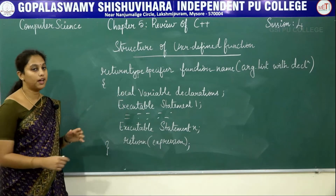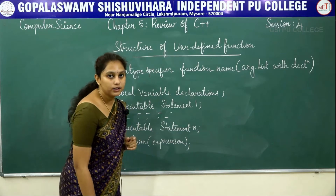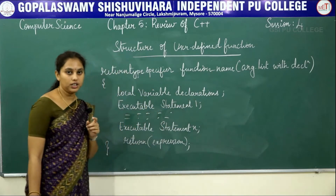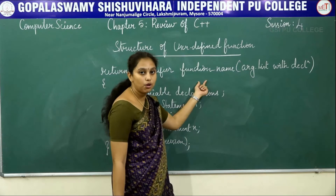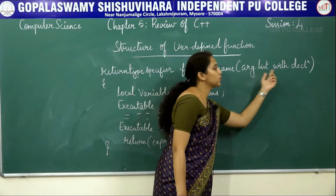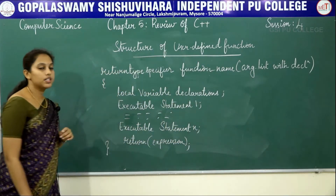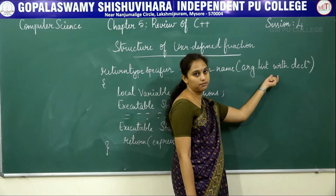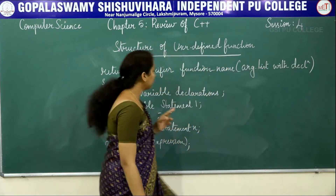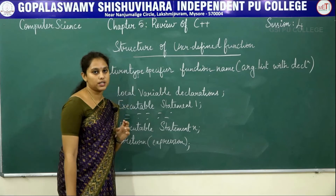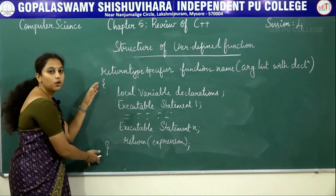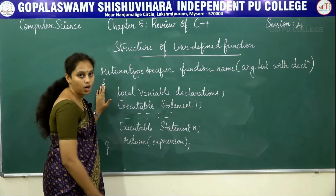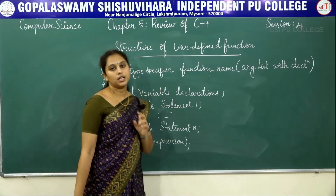The return type void is used when the function does not return any value to the calling function. The function name is an identifier which identifies the name of the function. The argument list with declaration means we are declaring the arguments within the parentheses. Local variable declarations — within this block we declare variables that are used only within this block, hence they are called local variables.